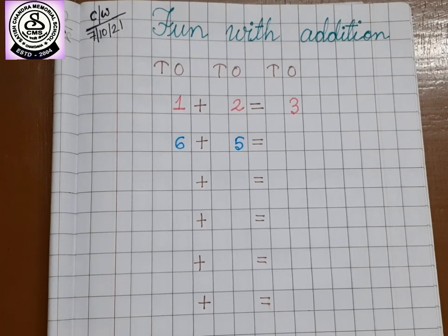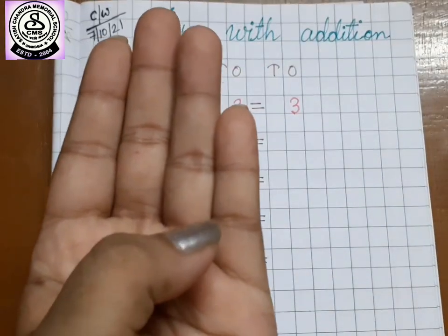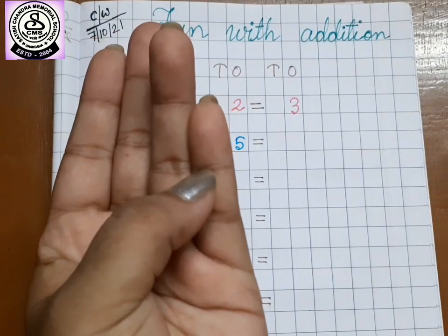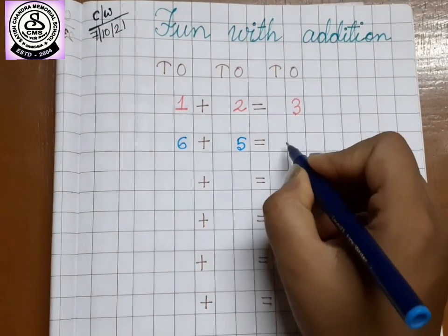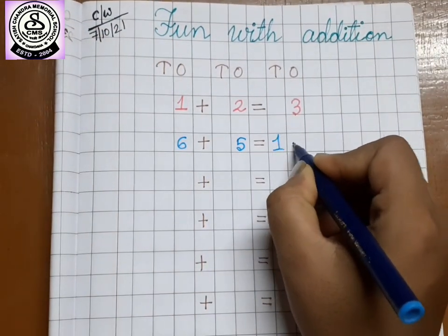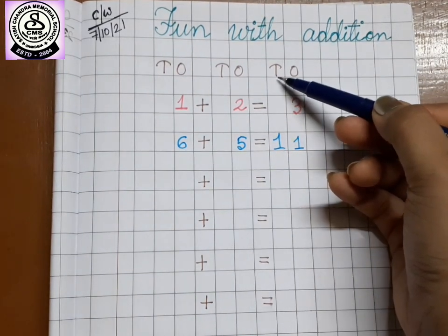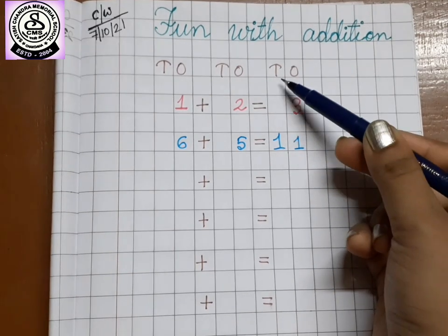After six, if you go five house, that means six on my head, five in my fingers. We get seven, eight, nine, ten, eleven. So, how much we got? We have got eleven. Also, remember this is tens place. So, eleven is two digit. It will come under this tens.